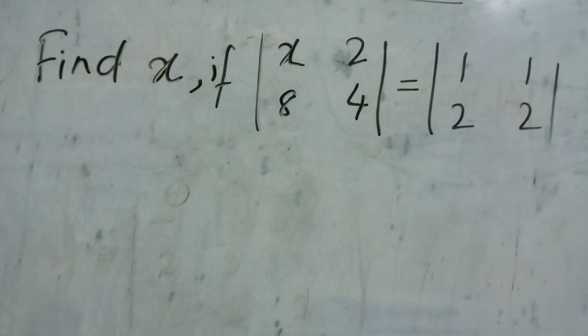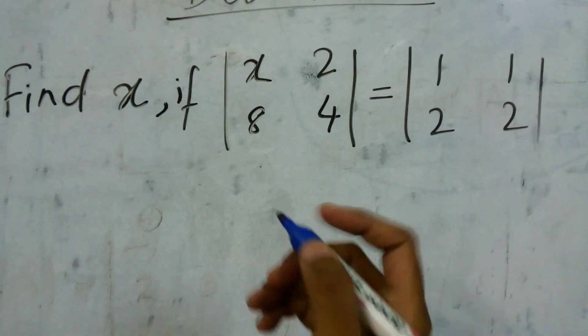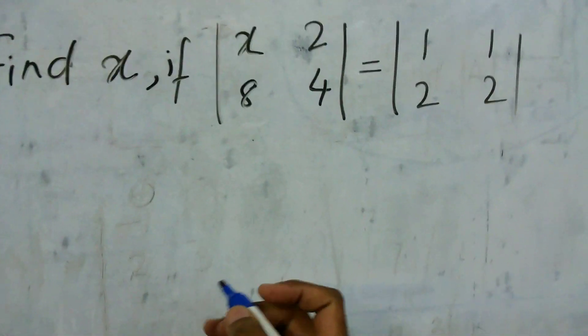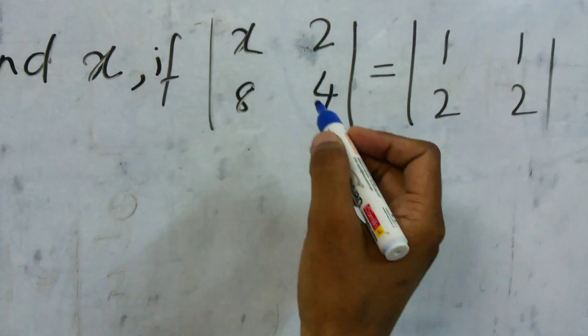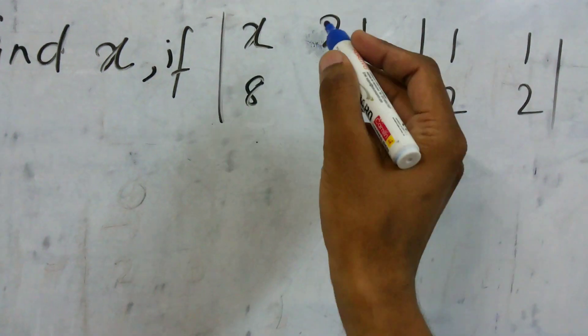So here we need to find x and we know if it is a 2 by 2 determinant, then what we have to do? We have to just multiply like x into 4 minus 8 into 2.